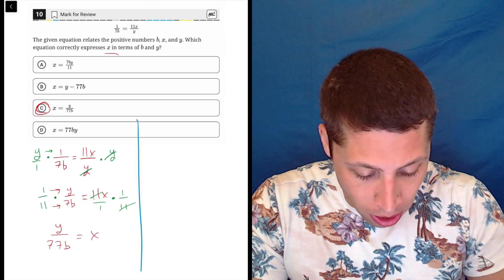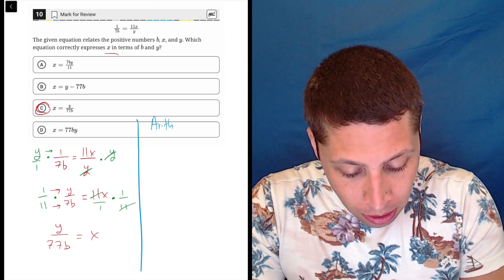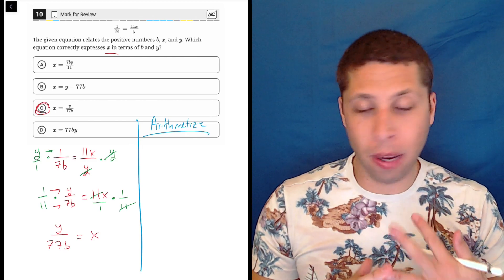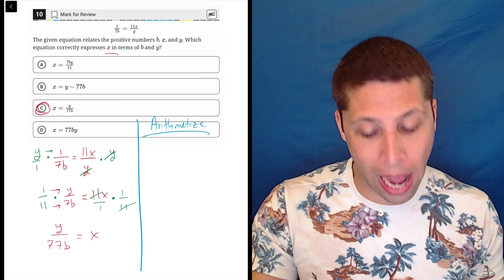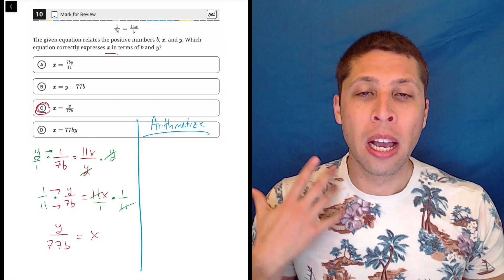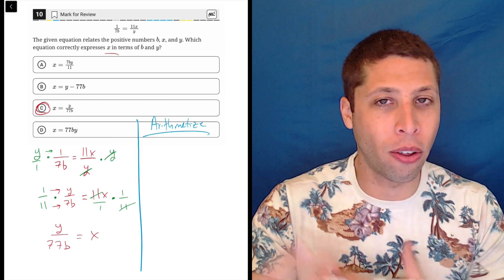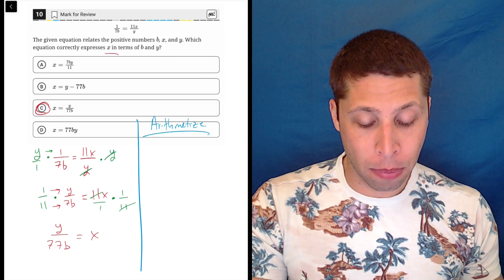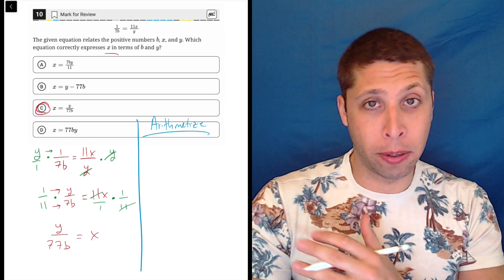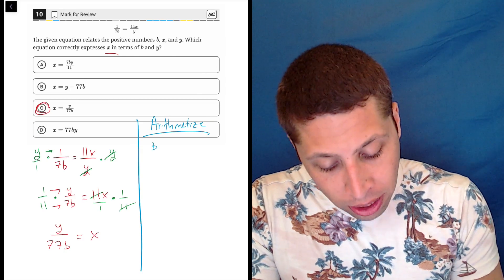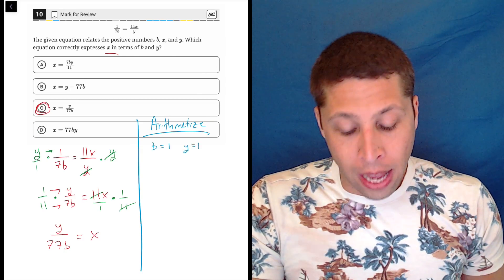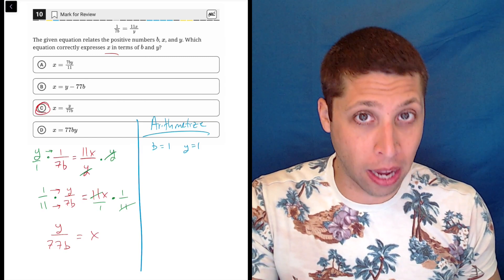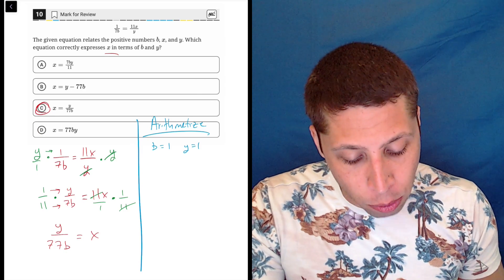One other path we have, though, is we could always arithmetize. They never make us solve for any of these variables, right? X is not a number. Y is not a number. B is not a number. So we can make them numbers and kind of just see what happens. And maybe this makes it easier to do all these moves because we aren't as intimidated by all the other variables. In this case, since X is kind of where I finally want to end up, I'm gonna make up values for the other variables, for B and for Y. And just to keep things simple, I'm gonna make both of them one. Can't make them zero because you can't divide by zero, right? So if we have fractions, we sometimes have limitations about what we can pick as our numbers.